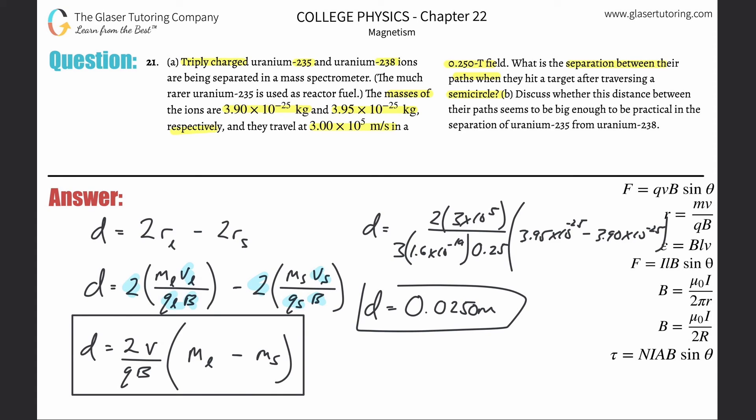What do we get? We get a distance here of 0.025 meters, or about 2.50 centimeters. You can do the conversions as you might need. And then letter b says discuss whether the distance between the paths seems big enough to be practical in the separation. Yeah, I mean 2.5 centimeters is I think reasonable. Anyway guys, thank you so much for tuning in. Please remember to help us out and subscribe, and I'll see you soon. Take care.